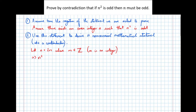If n equals 2m, then n squared equals 2m times 2m, which is 4m squared. We can take a factor of 2 out, therefore n squared is even.